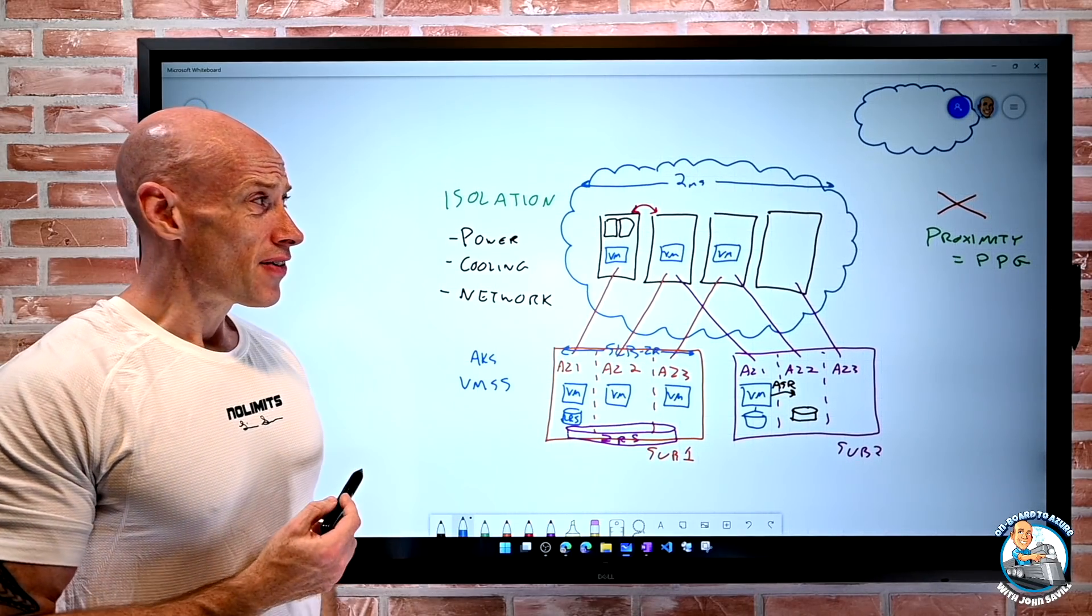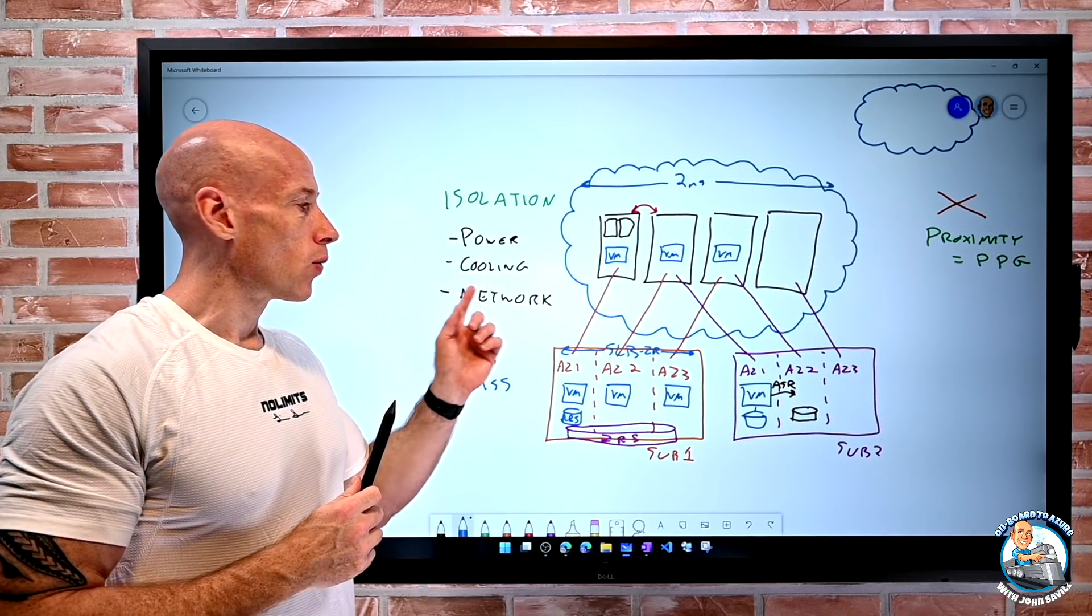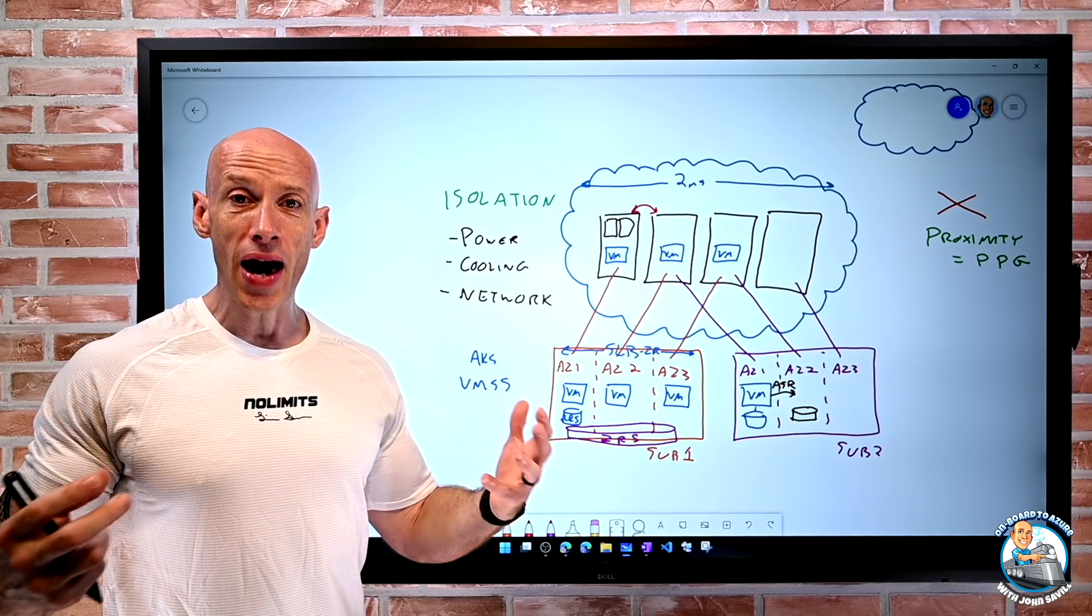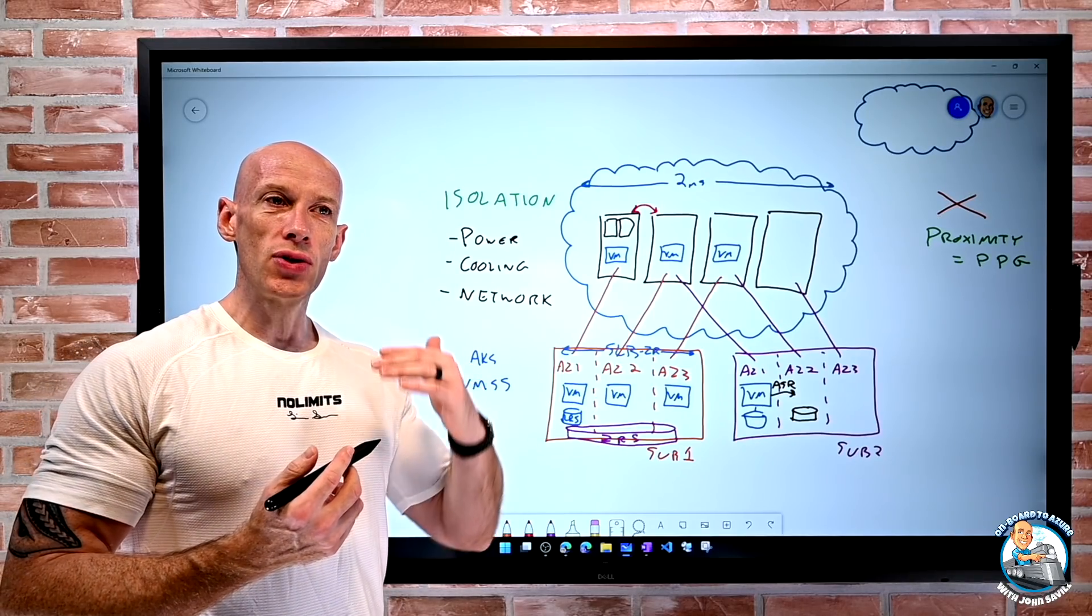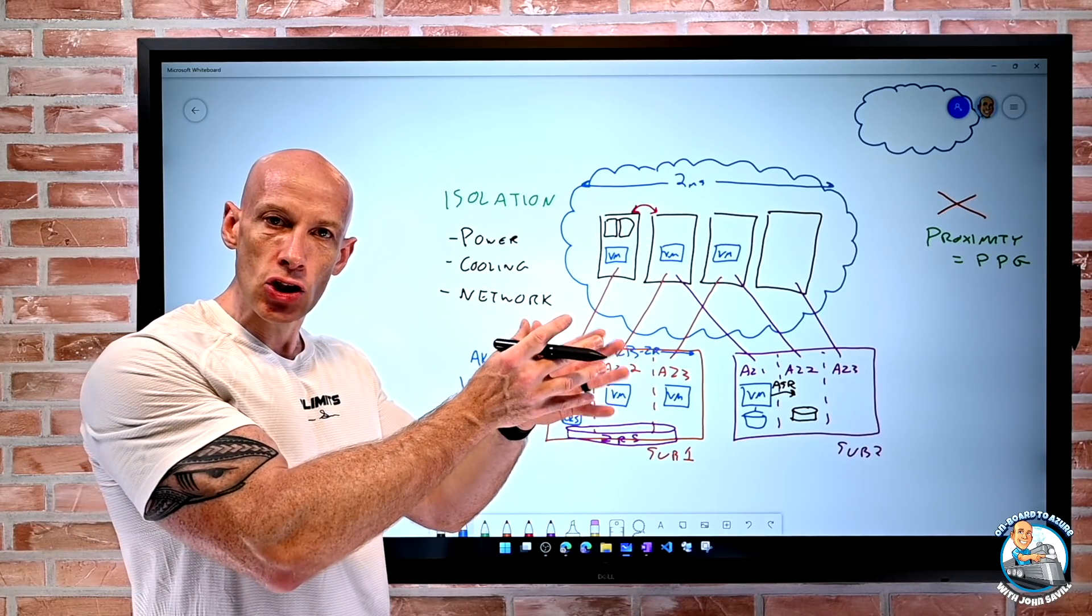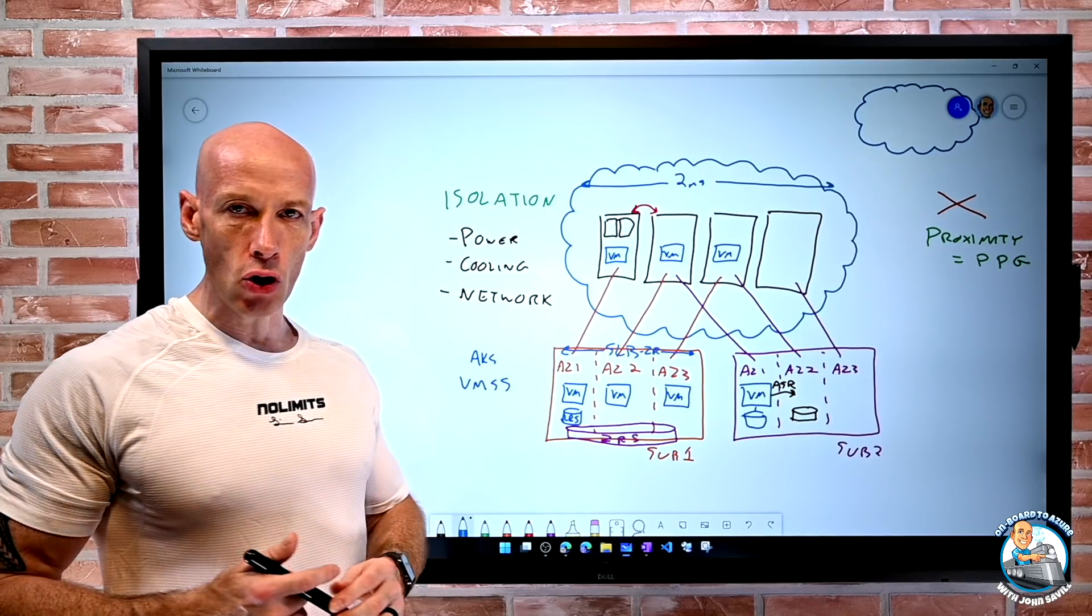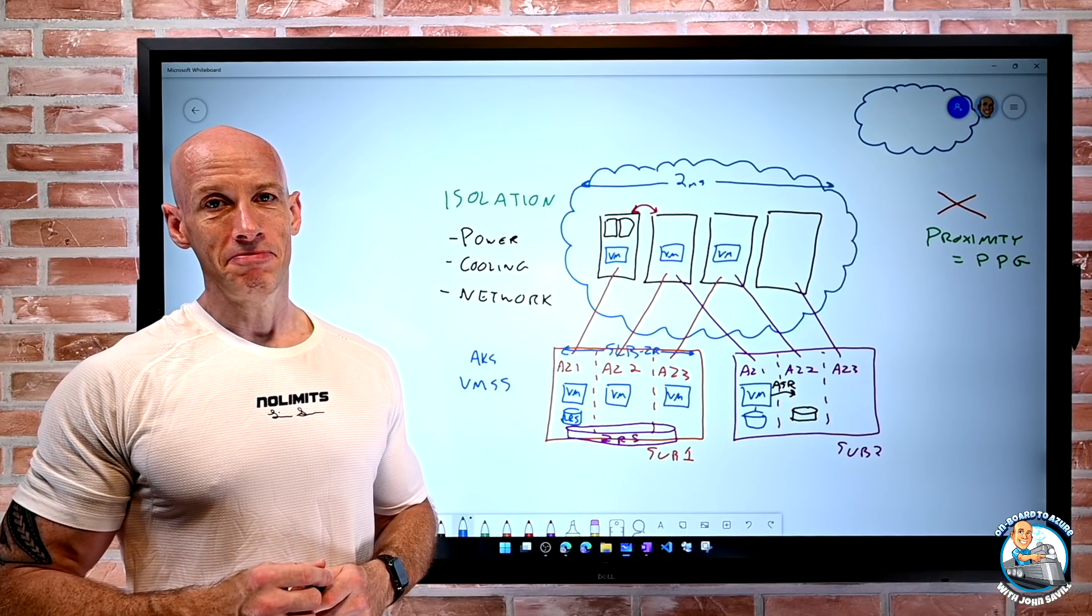So that's it. Availability zones are isolation of power, cooling, networking. To actually get the benefit, I need to have multiple eggs so I can put them in my multiple baskets and make sure I don't introduce some single point of failure that is just in one zone or doesn't let me have that kind of zone redundancy. So I hope that was useful. Until next time, take care.